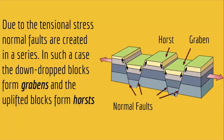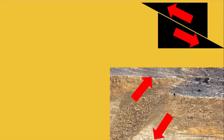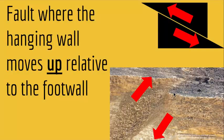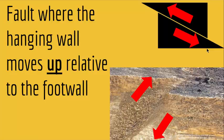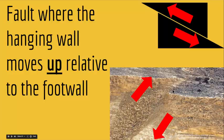In normal faults, the hanging wall moves down and the foot wall goes up. But what happens if the exact opposite occurs — the hanging wall goes up and the foot wall goes down? We get something called a reverse fault. A reverse fault is a fault where the hanging wall moves up relative to the foot wall. As you can see in this picture, this is the hanging wall and it went up while the other part went down.